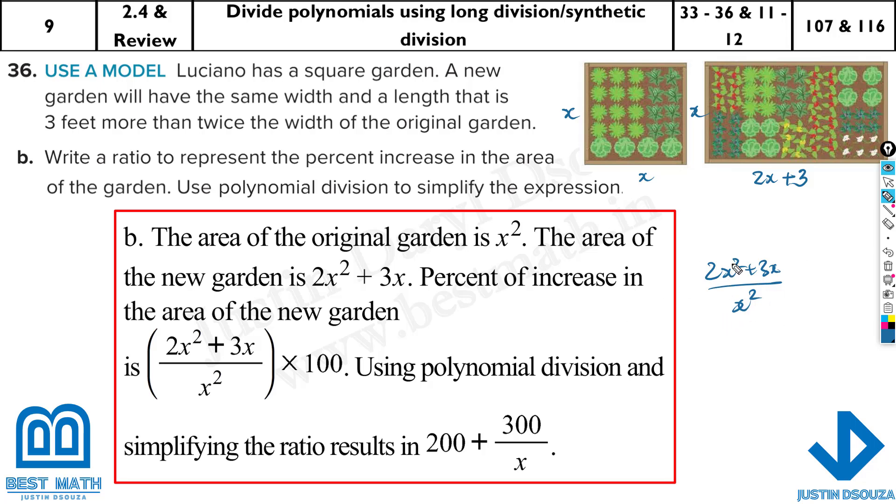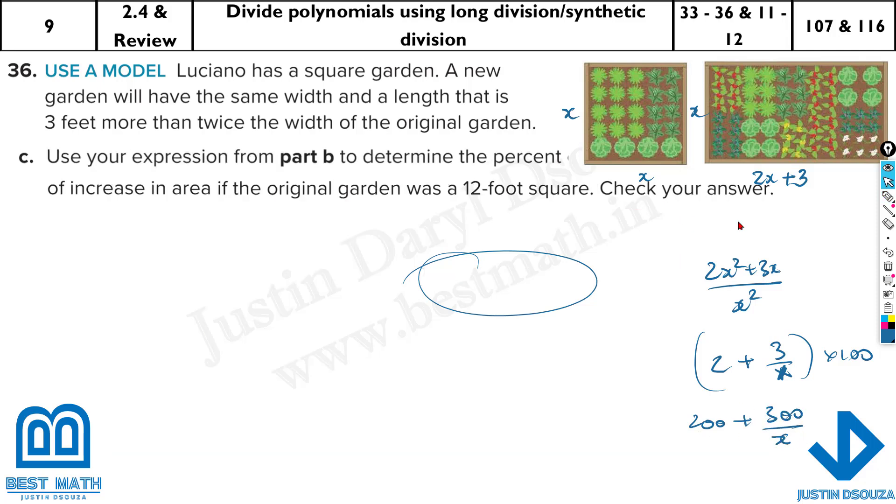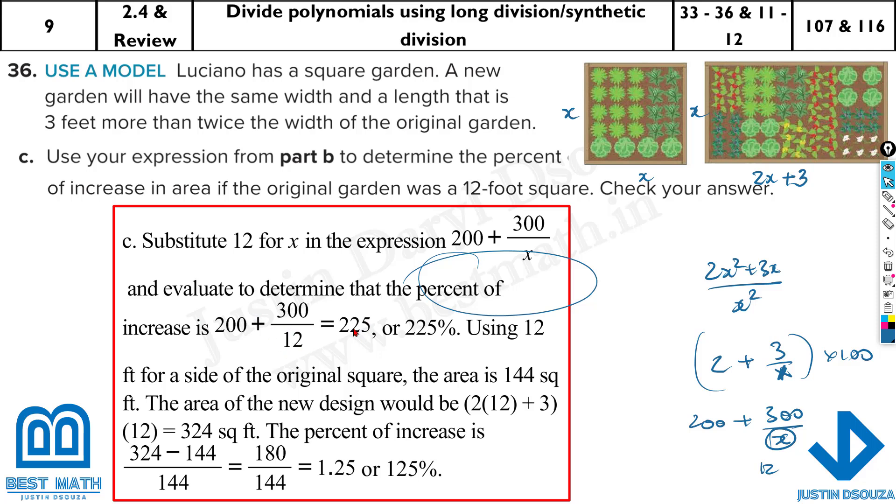But now, we can do the simplification here. It will be 2 plus 3 by x. But here, they have taken in terms of percentage, the percent of increase. So, percentage would be just multiplying by 100. So, it will be 200 plus 300 by x. And for the last part here, we have to use the percentage of increase if the original area was 12 feet. So, you just substitute this by 12, you'll get some area. Substitute by 12, you get 225%.